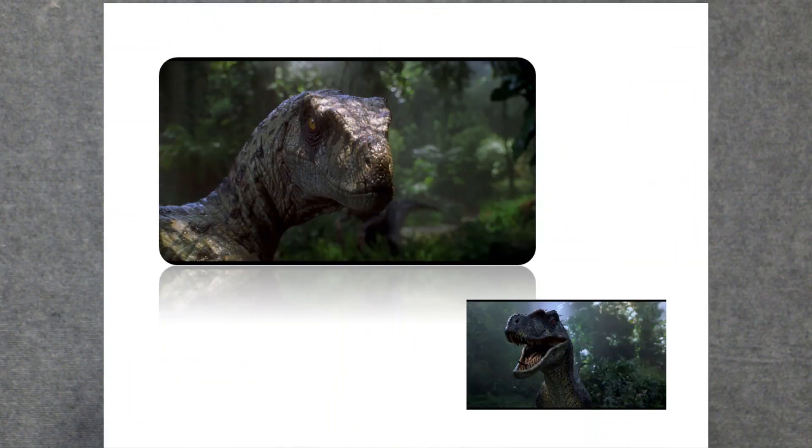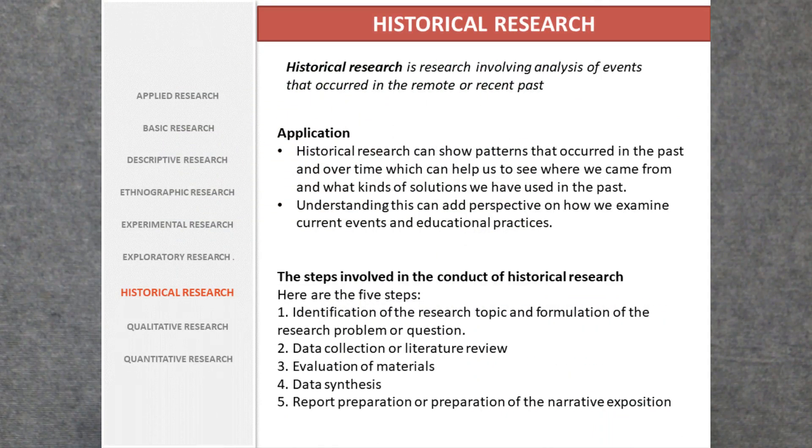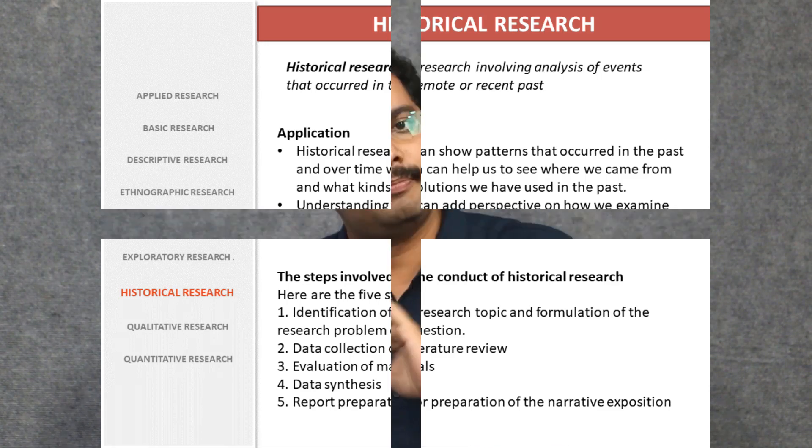The last research type is historical research, which is simple to understand. It is research that involves the analysis of events that occurred in the remote or recent past. It could include paleontological researches or examining patterns and perspectives on current events and educational practices. I hope you now have a clear idea of the different types of researches. I have one more video coming as a sequel — the difference between qualitative and quantitative researches. Thank you very much.